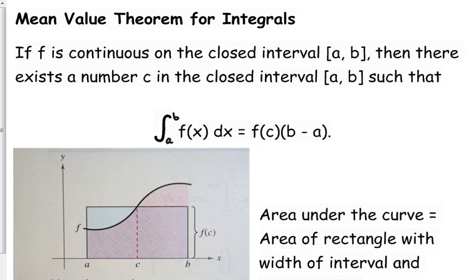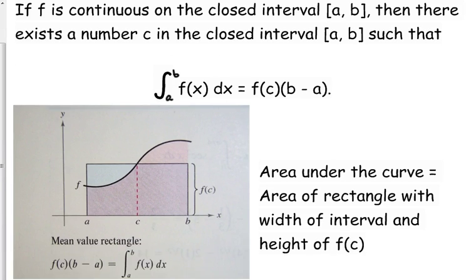Well, the mean value theorem says that if we have a continuous function, then the integral from a to b of the function is equal to f(c) times b minus a. Now, what that means, I know it looks weird, but what that means, the best way to illustrate it is with a picture.